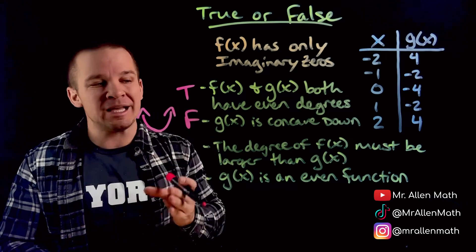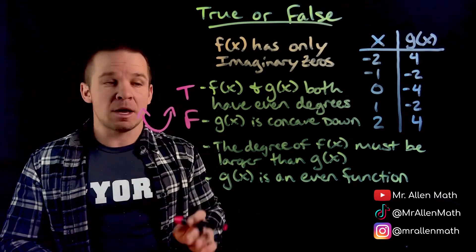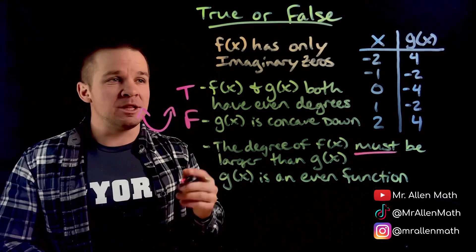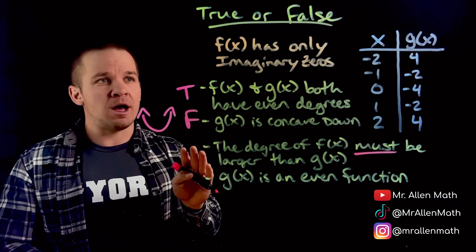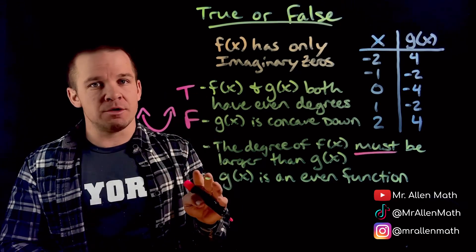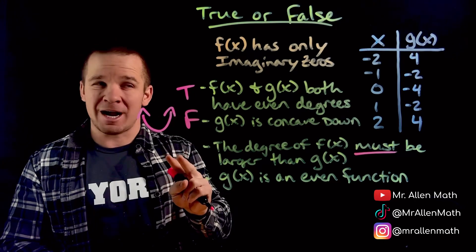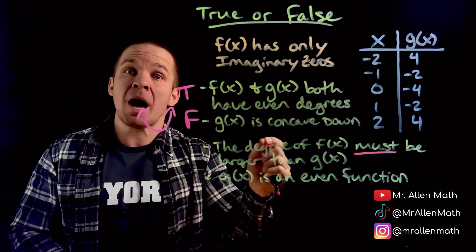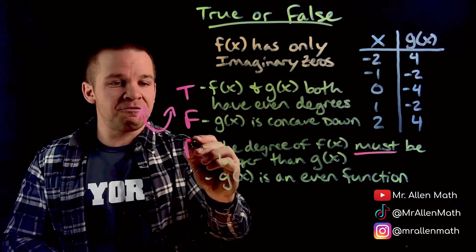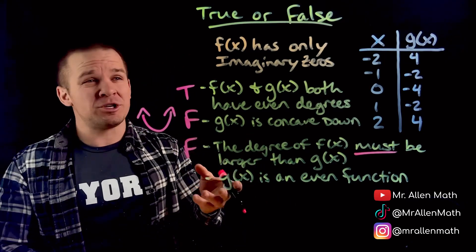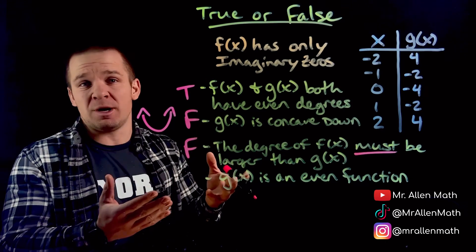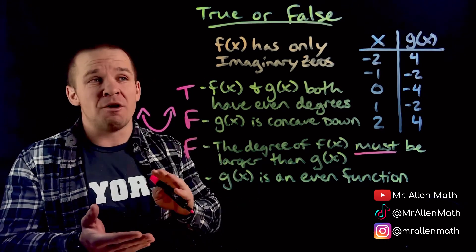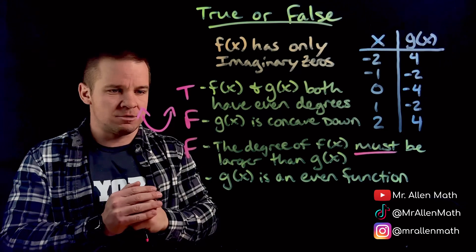All right, next one. The degree of f of x must be larger than g of x. Must. Must be larger. Well, hold up. I could have imaginary zeros and only have two of them, which would make it a quadratic, right? So it could be larger, but it's not must be larger. So we're going to have to say false for this one. But for some stipulations, like f of x could be a larger degree. It could be. It could be a degree of 4. It could be a degree of 6, 8, any even degree there.